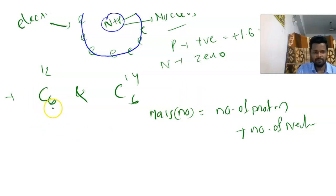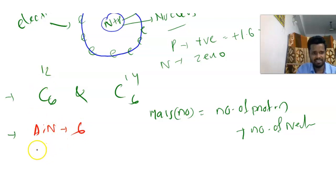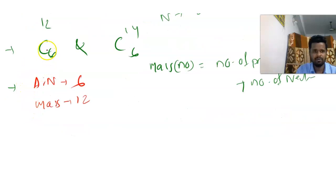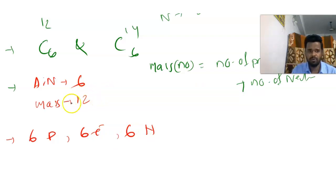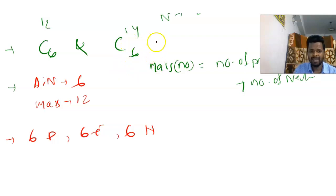The atomic number in carbon is 6 and the mass number in the first isotope is 12. So for Carbon-6-12, we get 6 protons, 6 electrons, and 6 neutrons — since 12 minus 6 equals 6. For the second isotope, Carbon-6-14, we get 6 electrons, 6 protons, and 8 neutrons — since 14 minus 6 equals 8.